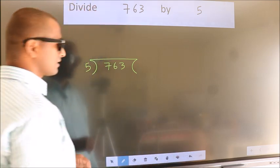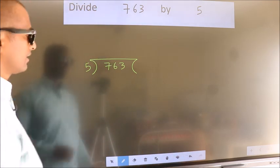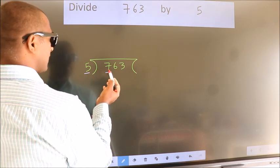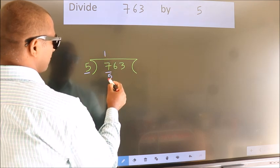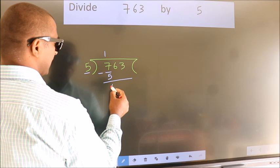This is your step 1. Next, here we have 7, here 5. A number close to 7 in 5 table is 5 once 5. Now we should subtract. We get 2.